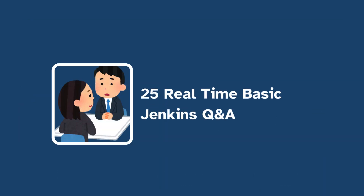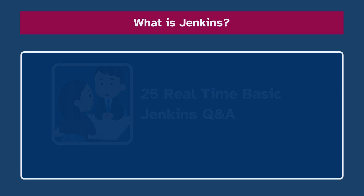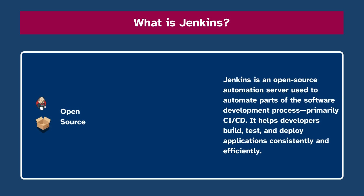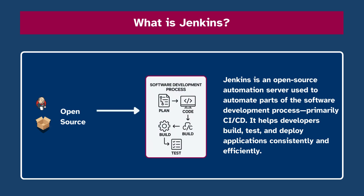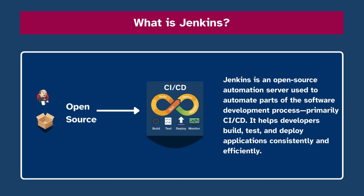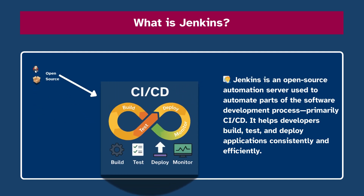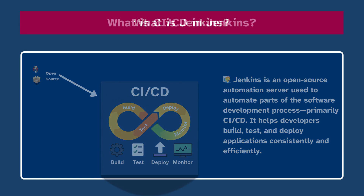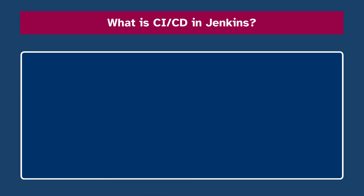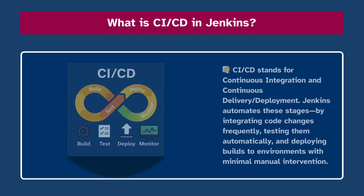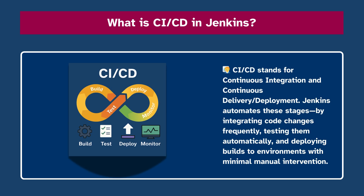Now let's discuss 25 basic Jenkins Q&A. Number one: What is Jenkins? Jenkins is an open-source automation server used to automate parts of the software development process, primarily CI/CD. It helps developers build, test, and deploy applications consistently and efficiently. Number two: What is CI/CD in Jenkins? CI/CD stands for Continuous Integration and Continuous Delivery or Deployment.